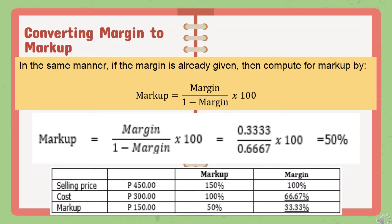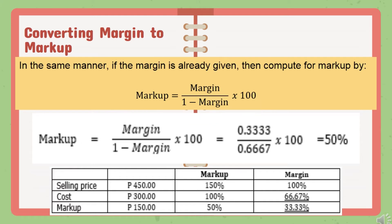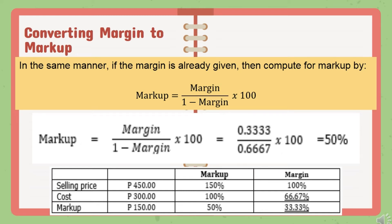If the margin is already given, compute the markup using this formula: markup = margin / (1 − margin) × 100. If markup is missing and margin is given as 33.33%, first convert 33.33% to decimal form: 0.3333. Substitute into the formula: markup = 0.3333 / (1 − 0.3333) × 100 = 0.3333 / 0.6667 × 100.